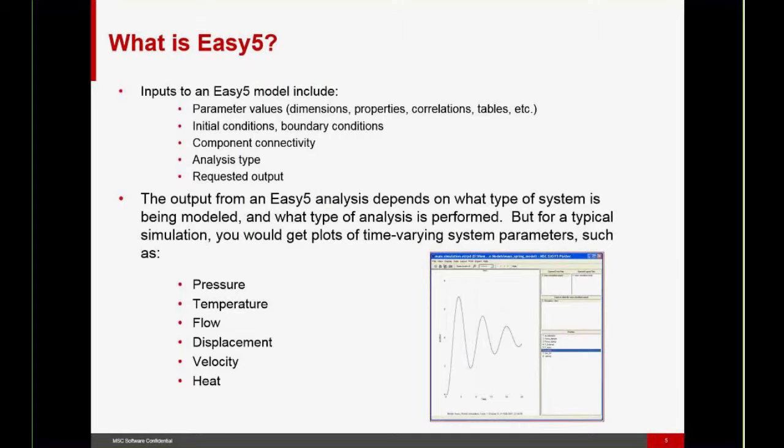The component icons in a schematic are related by connection lines, the connection lines representing the data flows between the components. The components along with the connections and the data that you provide constitute a system-level math model. The inputs to an EZ5 model would include parameter values such as orifice diameters or pipelines, physical properties, correlations of such things as friction factors, tabular correlations or complex geometries, and other types of parameter values. It also includes initial conditions and boundary conditions, component connectivity, and then after the model topology has been defined, one needs to define the analysis type via transient simulation or steady state analysis or some sort of linear analysis.